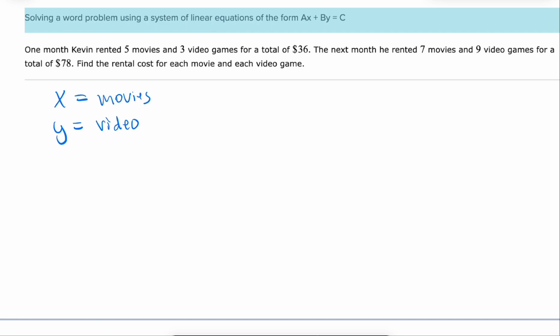And then we know, so that's the price of the movie and the price of the video game, better description. We know that five x's plus three y's total 36 and then seven x's plus nine y's equals 78. So those are our two equations. I think this is a good one to use elimination. Let's multiply this top one here by negative three.